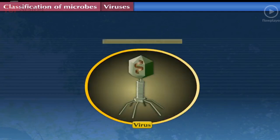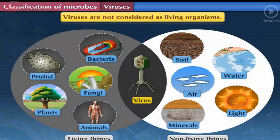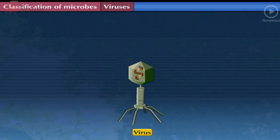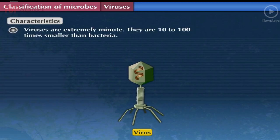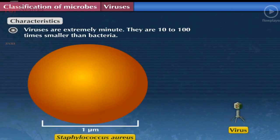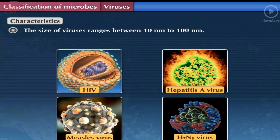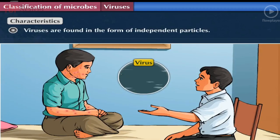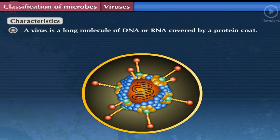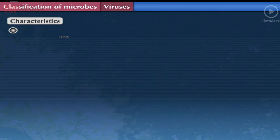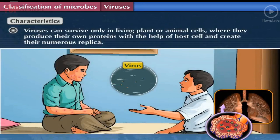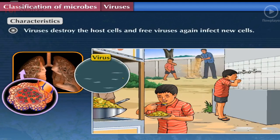Viruses: Generally, viruses are not considered living organisms — they are said to be at the edge of living and non-living, and are studied in microbiology. Viruses are extremely minute, 10 to 100 times smaller than bacteria, ranging from 10 nanometers to 100 nanometers, and can be viewed only under an electron microscope. A virus is a long molecule of DNA or RNA covered by a protein coat. Viruses survive only in living plant or animal cells, where they produce proteins using the host cell, create numerous replicas, destroy the host cell, and then infect new cells.